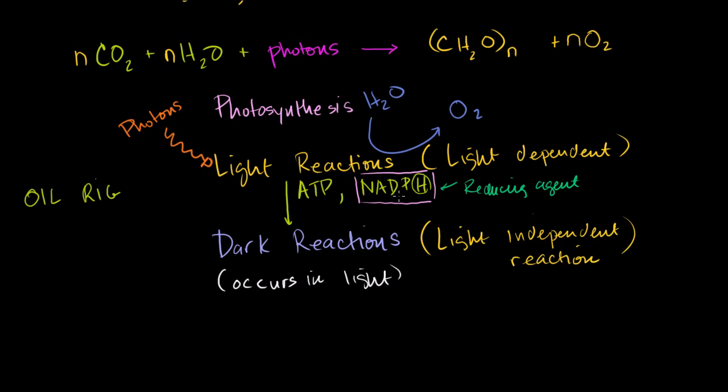As it gave away its electrons and they went to lower energy states. But I don't want to confuse you too much. So the light reactions, you take in photons, you take in water, it spits out oxygen, and it spits out ATP and NADPH that can then be used in the dark reactions.